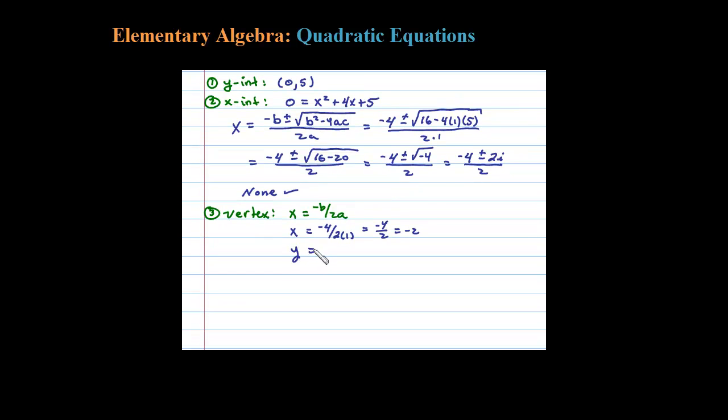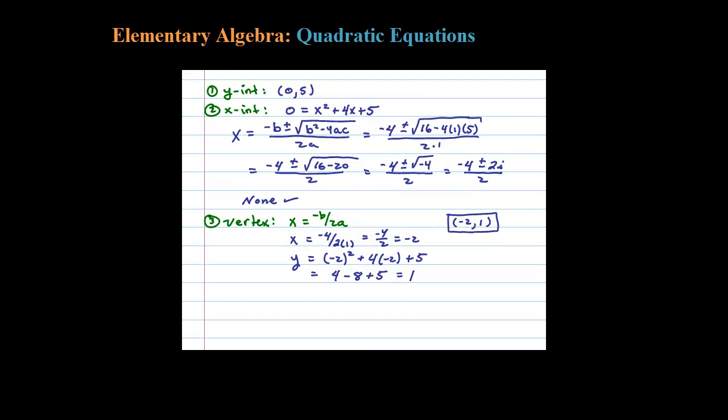Now we need to find the corresponding y value by plugging in negative 2 to the original. So negative 2 squared plus 4 times negative 2 plus 5. Simplifying, this will have 4 minus 8 plus 5, which is equal to 1. So the vertex here occurs at negative 2 comma 1.